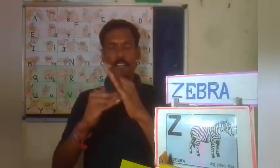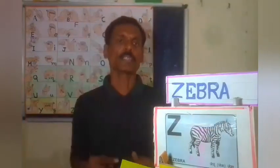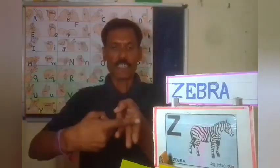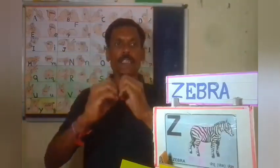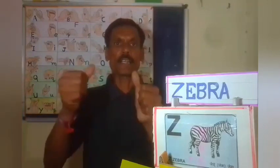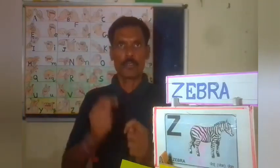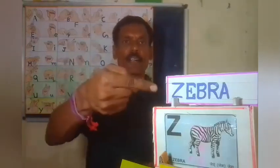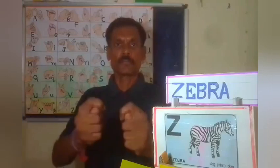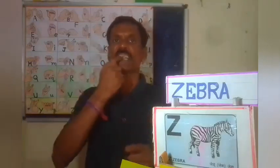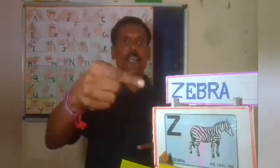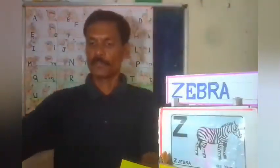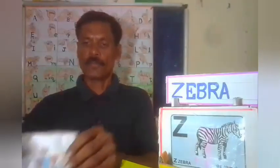Z — Z for Zebra. Spelling: Z, A, B, R, A — Zebra.